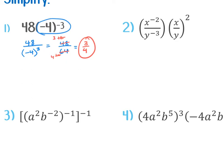A student asks: isn't it negative 64? Yes, thank you — just making sure you're paying attention. It's negative because it's negative four times negative four times negative four, so thank you Madeline, that should have been negative 64. So that negative can be out front, like negative three-fourths. It could be in the top, it could be in the bottom — it doesn't matter as long as it's only in one of those locations.